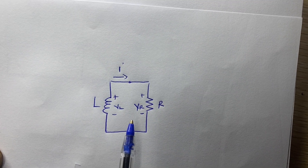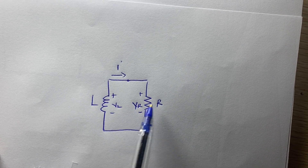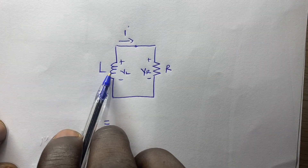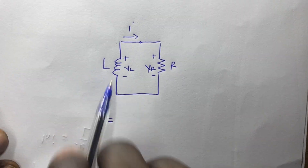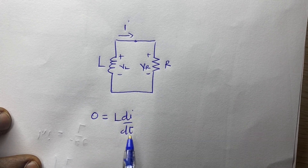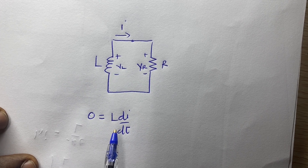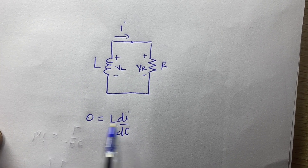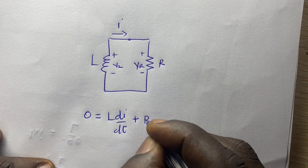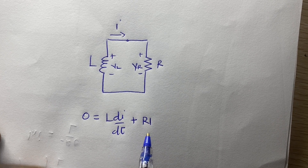And we know from KVL that the algebraic sum of voltages in a closed loop is equal to 0. So since we don't have a voltage source here, we are going to get 0, which is equal to the voltage that will be dropped at this inductor. Of course, we are going to get L di/dt. We are getting di/dt because this inductor gets charged with differential current. As the current changes and alternates, then the inductor gets charged. Plus the current times resistance is going to give us the voltage drop across R.